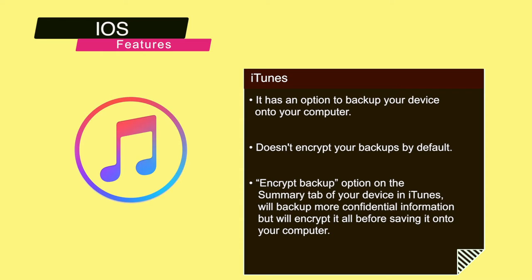Here are some other iOS features you should think about using if you are dealing with private data. iTunes has an option to backup your device onto your computer. iTunes doesn't encrypt your backups by default. If you choose the encrypt backup option on the summary tab of your device in iTunes, iTunes will backup more confidential information such as Wi-Fi passwords and email passwords, but will encrypt it all before saving it onto your computer. Be sure to keep the password you use here safe, as restoring from backups is a rare event but extra painful if you cannot remember the password to unlock the backup in an emergency.